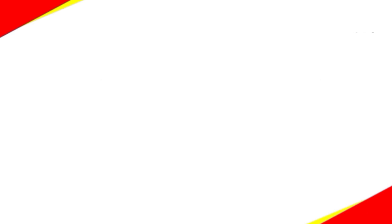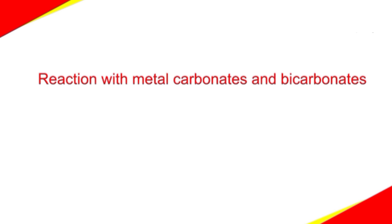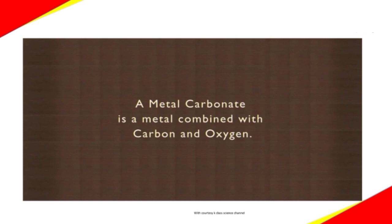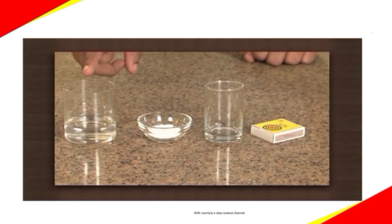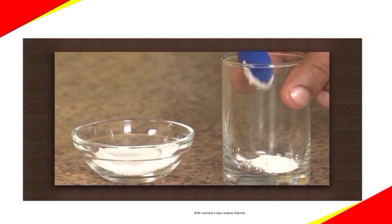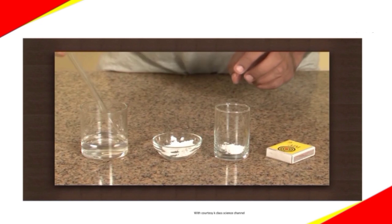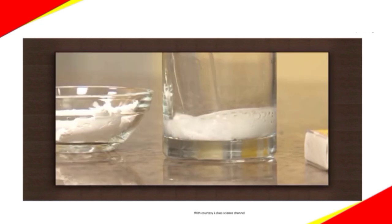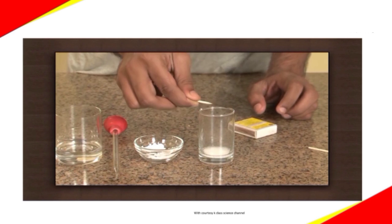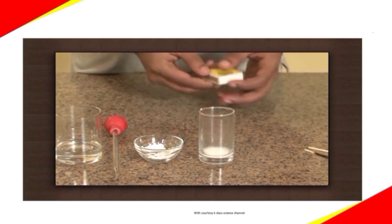The next property is reaction with metal carbonates and bicarbonates. When an acid reacts with metal carbonates and bicarbonates, it liberates carbon dioxide gas. A metal carbonate is a metal combined with carbon and oxygen. Let us perform an activity — take some calcium carbonate, which is a metal carbonate, into the beaker and add few drops of an acid. You can see the gas evolved in the form of effervescence. Light a matchstick and bring it to the beaker — it puts off. The gas which puts off a burning splint is nothing but carbon dioxide gas.